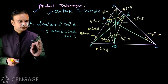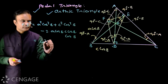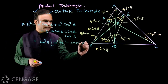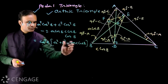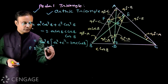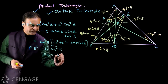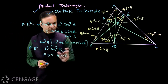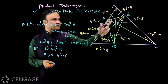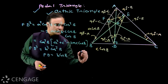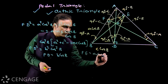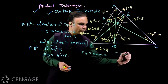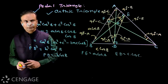Taking cos²B as a common factor: FD² = cos²B(A² + C² − 2AC cos B). By the cosine rule, A² + C² − 2AC cos B = B², so FD² = B² cos²B, giving FD = B cos B. Similarly, the side opposite angle A is FE = A cos A, and the side opposite angle C is ED = C cos C. These are the sides of the pedal triangle.